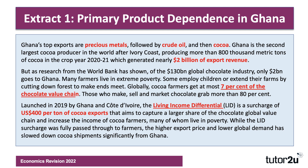Those who make, sell, brand, and market the chocolate grab more than 80%. Ghana and the Ivory Coast in 2019, in a bid to increase prices and revenues going to cocoa growers, introduced the LID — the Living Income Differential — which is essentially an export premium price: a surcharge of US$400 per tonne of cocoa exports. It's designed to capture a bigger share of the global chocolate value chain and increase the incomes of cocoa farmers, many of whom live below the $1.90 a day poverty line. The extract suggests that while LID was passed on to farmers and they got a better price, the higher price and lower global demand has slowed down cocoa shipments significantly from Ghana.